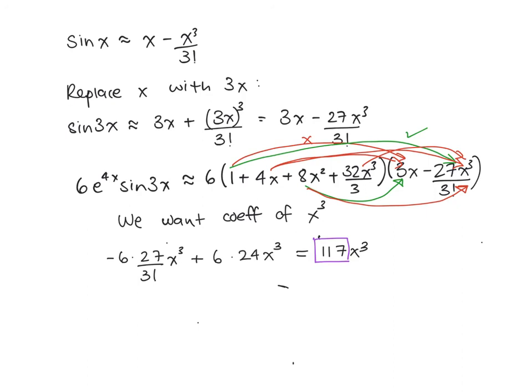So our final answer is: the coefficient of x cubed is 117.